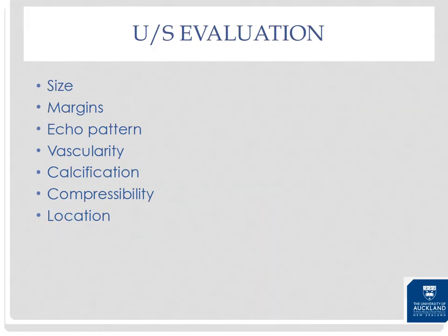When evaluating a soft tissue mass, we need to assess size by measuring in three planes, the margins — ill-defined or well-defined — and the echo pattern: hypoechoic, hyperechoic, homogeneous, or heterogeneous. Is the mass vascular? Can we identify small or large calcifications? Is it compressible or not? And it's really important to describe the location of the mass.